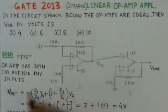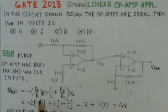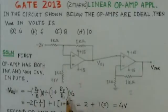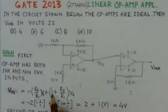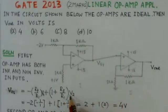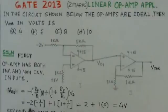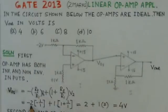Vo1, this is the output of operational amplifier 1. Vo1 is given as minus Rf by R1 into V1, the input applied to the inverting input, plus 1 plus Rf by R1 into V2 applying to non-inverting input. We observe here that the input applied to the inverting input is minus 2 volts.